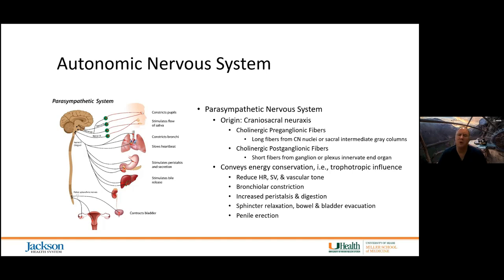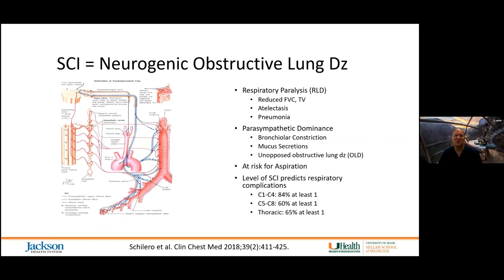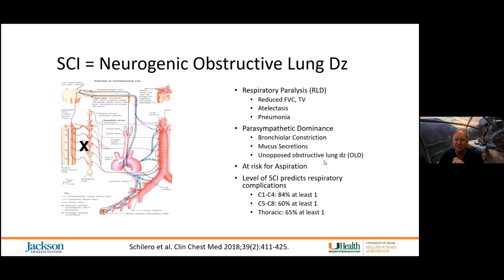Spinal cord injury causes neurogenic obstructive lung disease in addition to restrictive lung disease. Because of the parasympathetic dominance following SCI, we end up at all times with a relative bronchiolar constriction, mucous secretion, and unopposed obstructive lung disease.